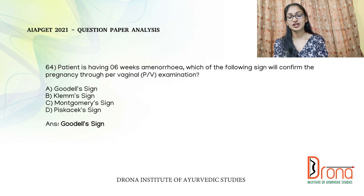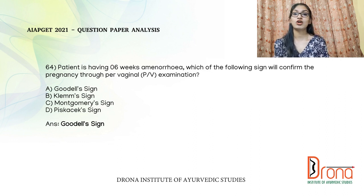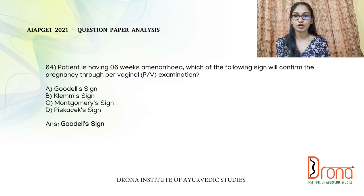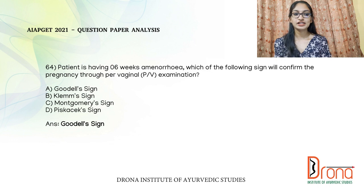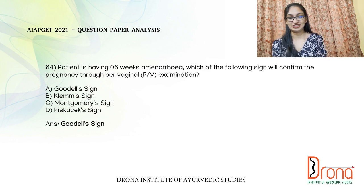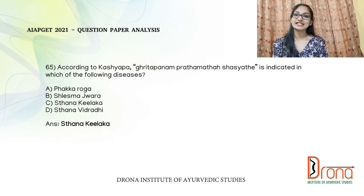Montgomery's sign refers to breast enlargement with increased vascularity, veins visible under the skin, darkened nipple and areola, and enlarged sebaceous glands around the areola called Montgomery's tubercles — also not a per vaginal sign. Clem sign is seen in chronic appendicitis. Therefore, Goodell's sign is used to confirm pregnancy through per vaginal examination in this patient.